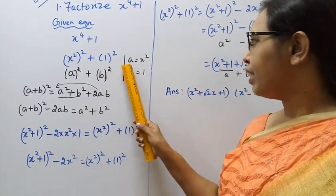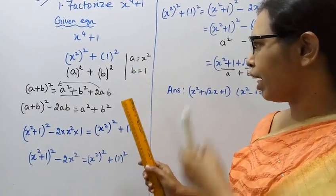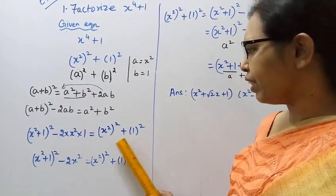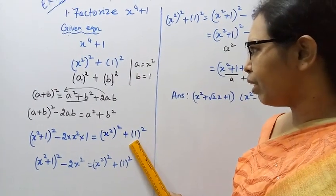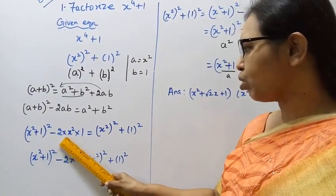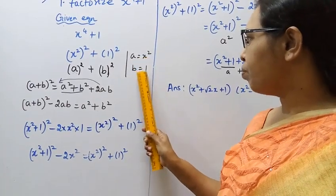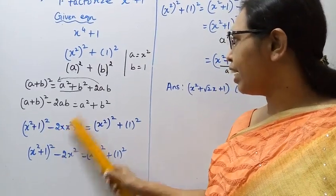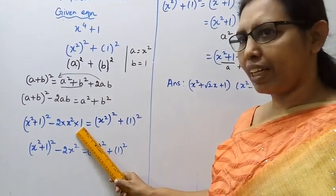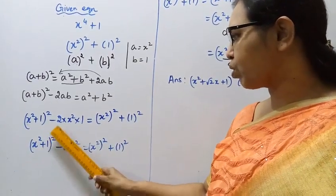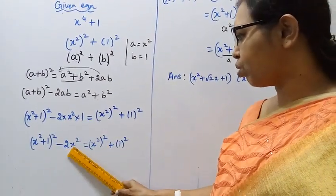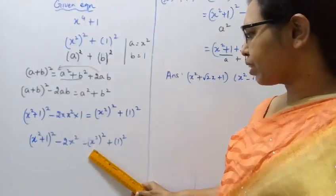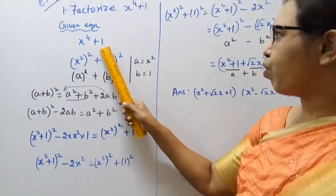So x² + 1² — here a is x² and b is 1. We write x⁴ + 1 as (x² + 1)² - 2ab, where a is x² and b is 1. That gives us (x² + 1)² - 2·x²·1 = (x² + 1)² - 2x².